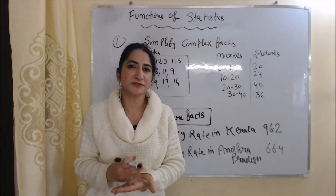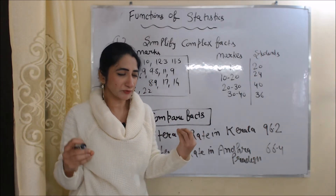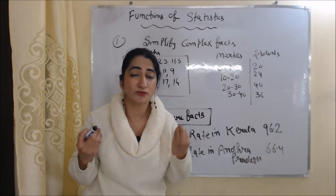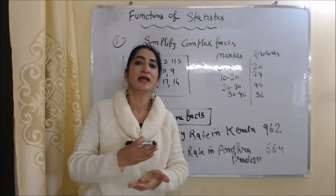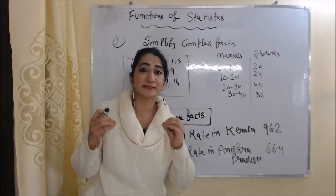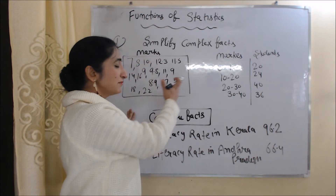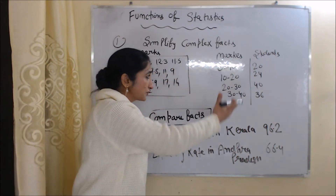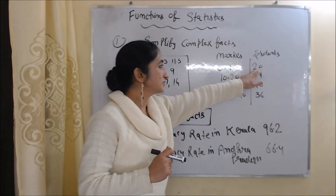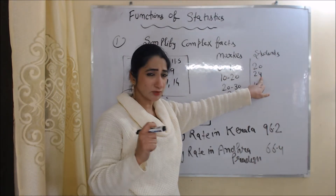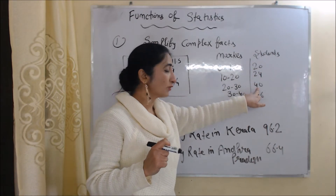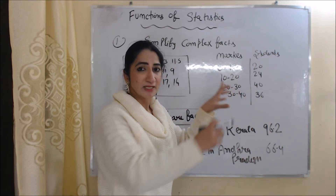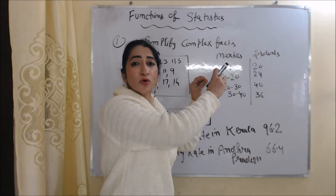Now we are going to talk about functions of statistics. The first function is to simplify complex facts. It is very difficult for us to understand huge numerical data, and statistics present complex data in a very simple form. For example, writing marks as: 20 students got marks between 0 to 10, 24 students between 10 to 20, 40 students between 20 to 30, and 36 students between 30 to 40 — then we can clearly understand. This is called statistics.